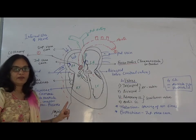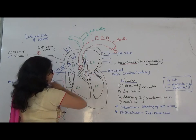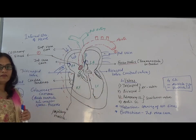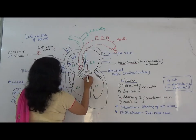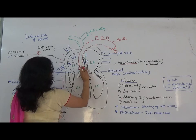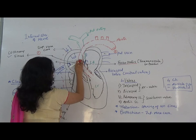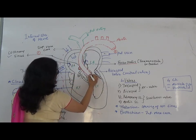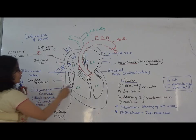The oxygenated blood arrives in the left auricle. From the left auricle, it passes through the bicuspid valve into the left ventricle. From the left ventricle, blood goes into the aorta — the biggest artery of the body. The opening of the aorta is guarded by the aortic semilunar valve.